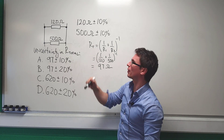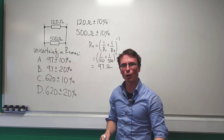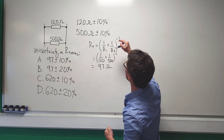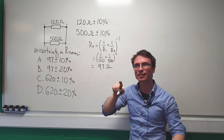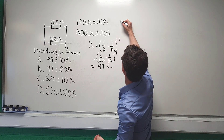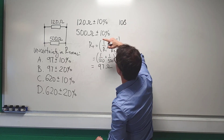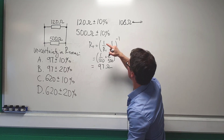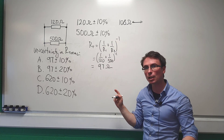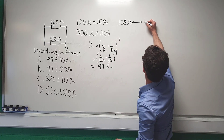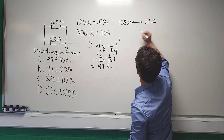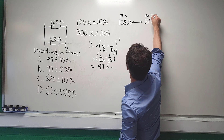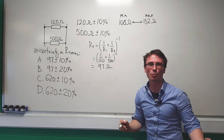10% of 120 ohms is 12 ohms. So the minimum value will be 120 minus 12, which is 108 ohms, and the maximum will be 120 plus 12, which is 132 ohms. This is the minimum and this is the maximum — the real value is somewhere in between.